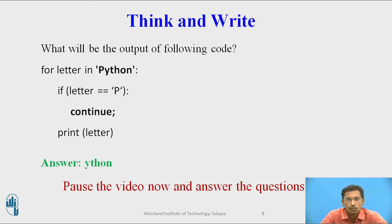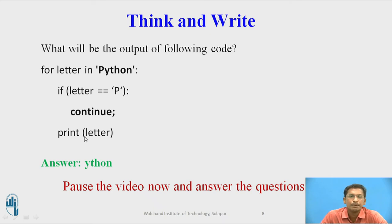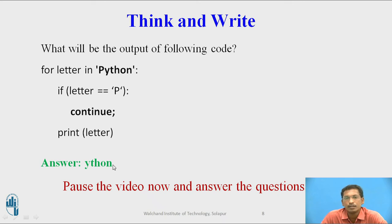The answer for this question is y, t, h, o, n. Initially, letter will point to 'p'. The condition if letter == 'p' is true, so continue means it will skip the next statement which is print. So it will not print 'p'. Next time letter will have value 'y', the condition is false, so the print statement executes and 'y' is printed. Similarly, 't' will be printed, 'h' will be printed, 'o' will be printed, 'n' will be printed. So, except 'p', it will print all the letters of 'python'.